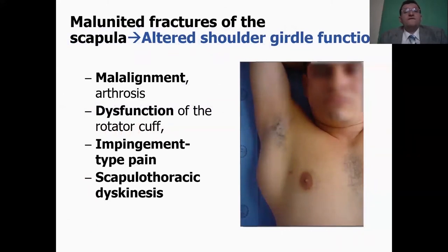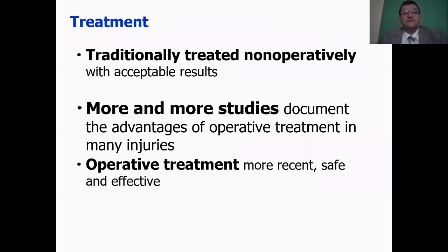So, malunited fractures of the scapula results in altered shoulder girdle function, malignment, arthrosis, dysfunction of the rotator cuff, impingement type of pain, scapulothoracic dyskinesia, which would affect shoulder function. So more and more operative treatment results are becoming published and people are considering them safe and effective.